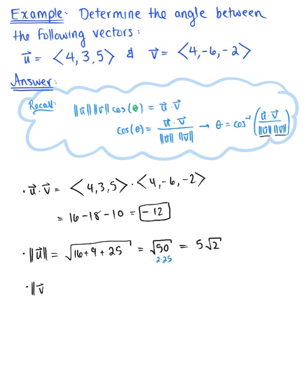Similarly, for the magnitude of vector v: we have the square root of 16 plus 36 plus 4, which gives us the square root of 56. Since 56 is 2 times 4 times 7, where 4 is a perfect square, this simplifies to 2 times the square root of 14.